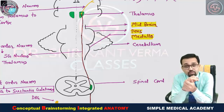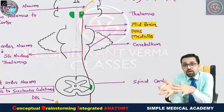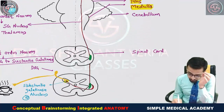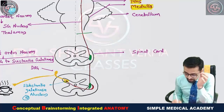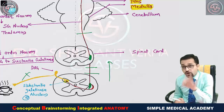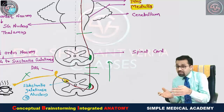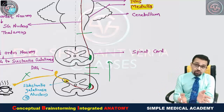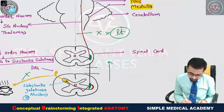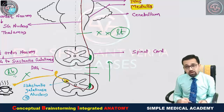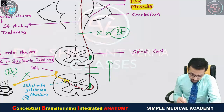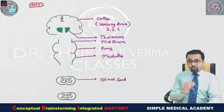It is called the lateral spinothalamic tract because the bundle of axons runs on the lateral side of the spinal cord up to the thalamus. This is an example of a crossed tract — if there is a lesion on the left side, the loss of pain and temperature sensation occurs on the right side (opposite side). This phenomenon is known as contralateral loss of sensation, since this is an ascending tract.